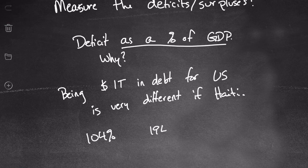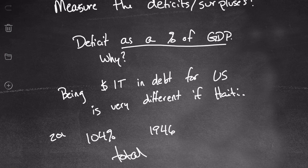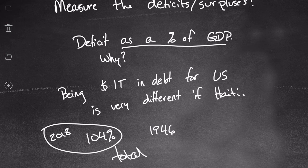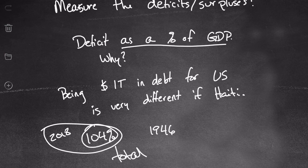The last time the US debt-to-GDP ratio was that high was in 1946, right after World War Two. This number comes from around 2018, so it's probably a lot higher today. We're at a pretty high level of debt in this country — not to say it's good or bad, it's just a fact. This 104 percent is the total amount of debt accrued over all years, not just the current year.